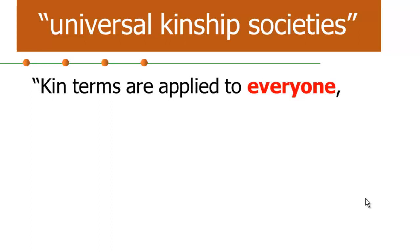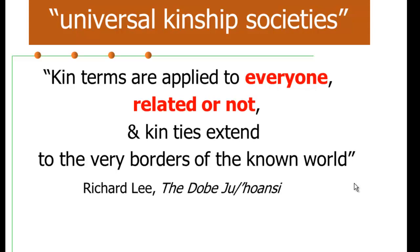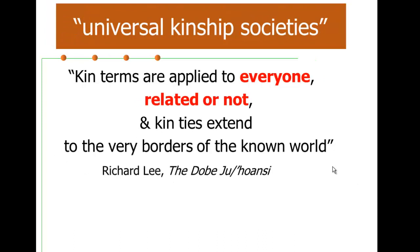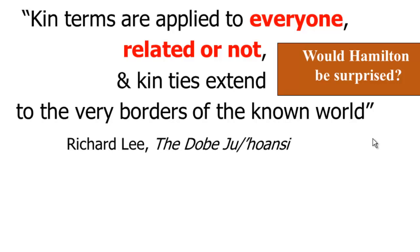Now the last concept we want to discuss here is the idea that in small-scale human societies kin terms are applied to everyone. And note that the quote here also says related or not. This means that people tend to think about everyone in terms of a kin relationship even if they can't define a genealogical tie to them. And kin ties extend to the very borders of the known world. That quote is from an anthropologist named Richard Lee who studied a group of hunter-gatherers named the Ju/'hoansi. And among the Ju/'hoansi, the only way people could interact was as kin. And we could pose the question, would Hamilton be surprised? And actually there is a surprising dimension to this and that's the kin terms are applied to people who are not related to us. And we'll be coming back to that in the next part of the course.